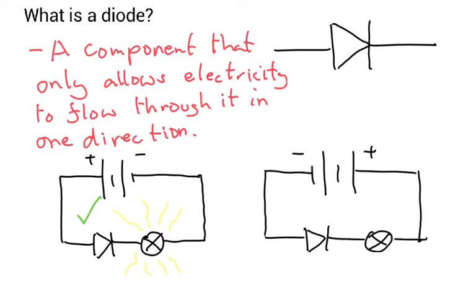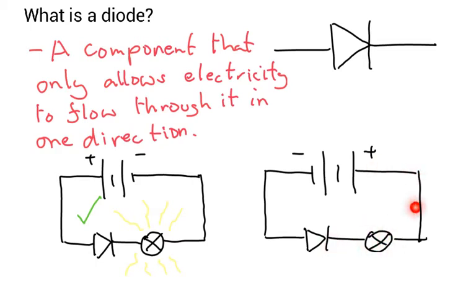But in this case here, the conventional current is trying to go around this way. But as it goes round, it's going to meet the wall here and it's not going to be able to flow through. So in this case, the bulb is going to be off.